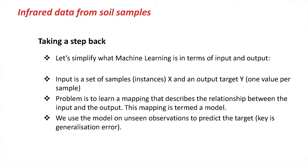Let's take a moment to think about what machine learning requires in order for us to develop an application of any kind. It needs input and output in its training phase. In our case, we need a set of soil samples and an output target value, which is going to be a real-valued number representing a property of interest of the soil.